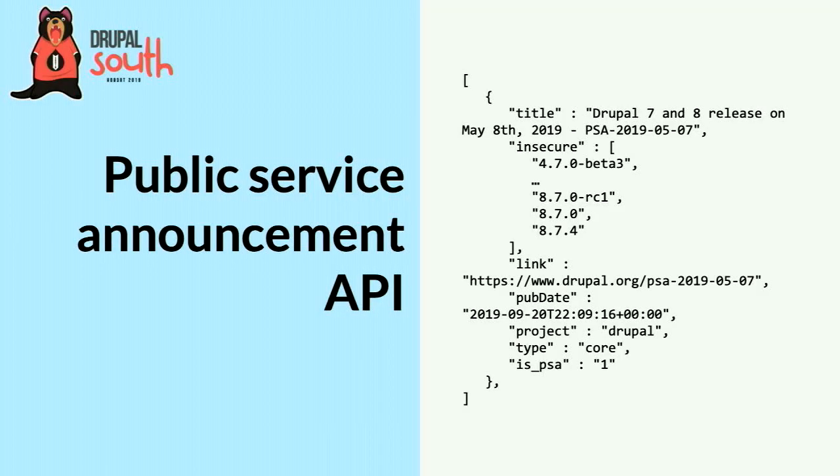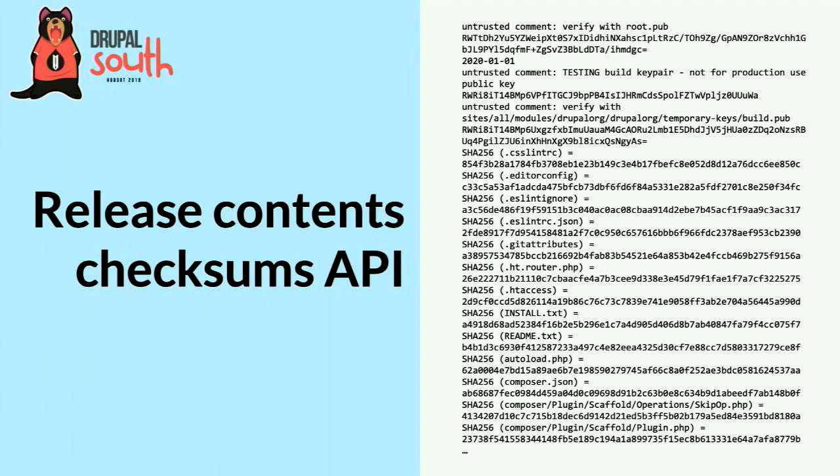The main work on the PSA API was done by Michael Hess. I reviewed, deployed, and did a few fixes. Basically it's a Drush command that pops something like this out to a file and clears the CDN cache. Once your site knows if there's an update coming up, we also want to know if your site actually can be updated.